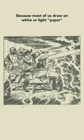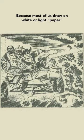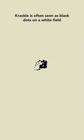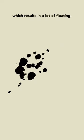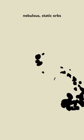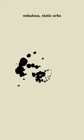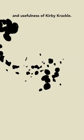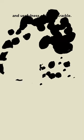Because most of us draw on white or light paper with a darker tool, Crackle is often seen as black dots on a white field, which results in a lot of floating nebulous static orbs that can contradict the intention and usefulness of Kirby Crackle.